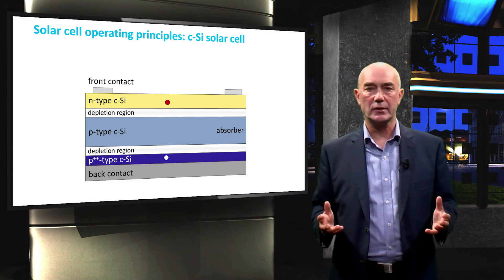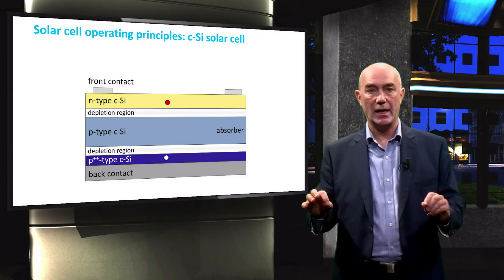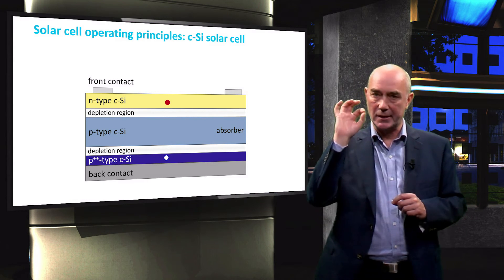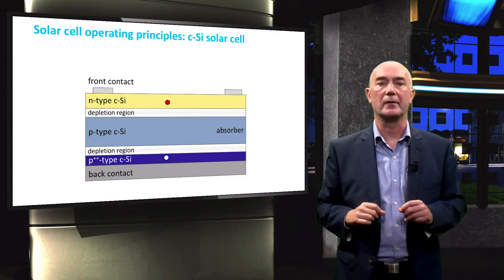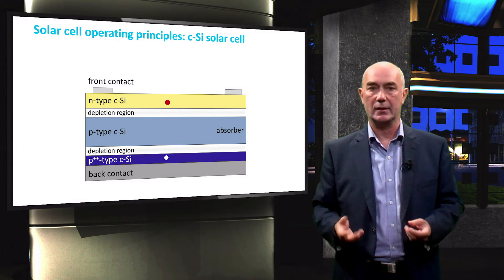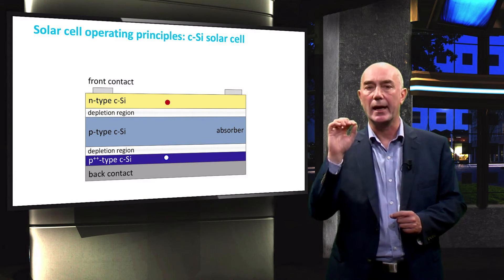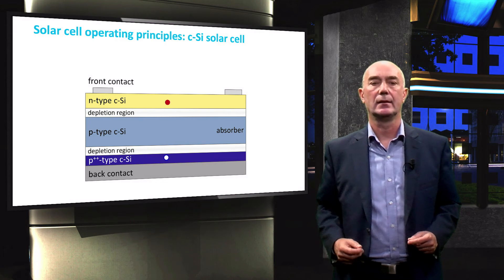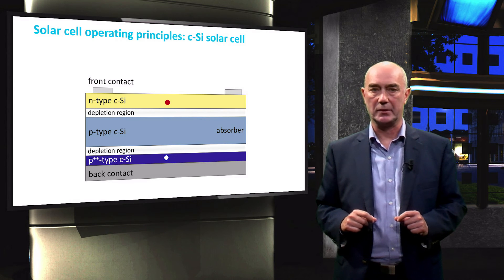Photogenerated electrons collected in the N-type crystalline silicon are safe there. The chance that they recombine in the N-type crystalline silicon is extremely small, because there are almost no holes available for the recombination process. A similar situation holds for photogenerated holes collected in the heavily doped P-type crystalline silicon — in this layer, there are almost no electrons available to complete the recombination process.